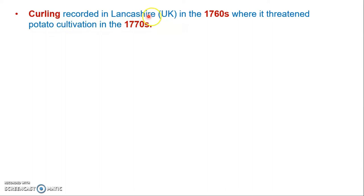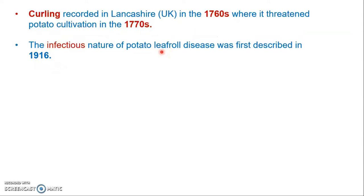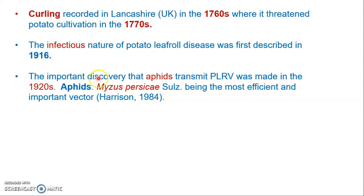Leaf curling was first recorded in Lancashire, UK in the 1760s and threatened potato cultivation from 1760 to 1770. At that time scientists did not know the causal agent. In 1916, the infectious nature of Potato Leaf Roll disease was first described, and in the 1920s it was discovered that the virus is transmitted by aphids, with about 10 aphid species responsible. Myzus persicae is the most efficient and important vector, as described by Harrison in 1984.